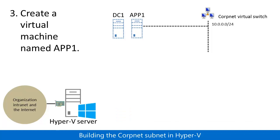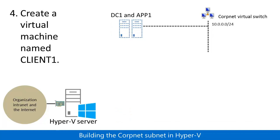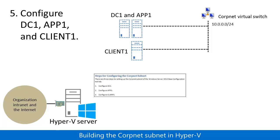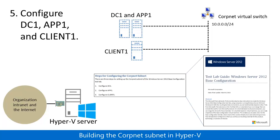In step three, you create a new virtual machine named App1 that is connected to the CorpNet virtual switch. In step four, you create a new virtual machine named Client1 that is connected to the CorpNet virtual switch. In step five, you configure DC1, App1, and Client1 using the steps for configuring the CorpNet subnet section of the Windows Server 2012 Base Configuration Test Lab Guide. This includes installing Windows Server 2012 and Windows 8 on the virtual machines.